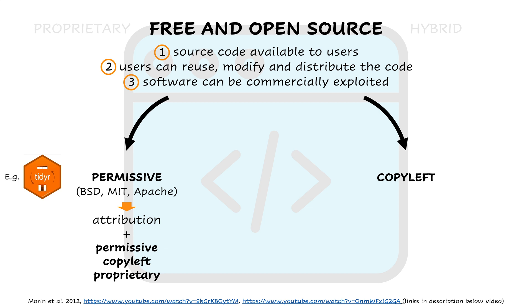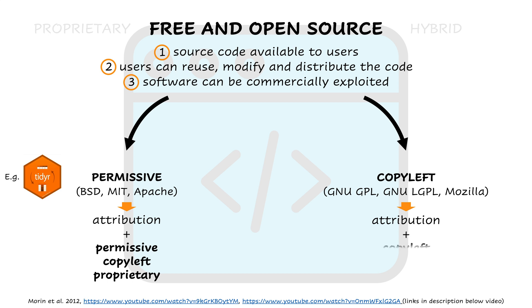Copyleft licenses include, for example, the GNU General Public License, GNU Lesser GPL, and Mozilla Public License. They require two things: attribution to the original authors, like permissive licenses, and additionally, those who use, modify, or extend our code have to release their code with the same license we used, which guarantees permanent openness of original and derived code.